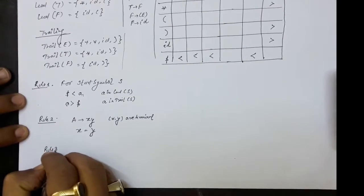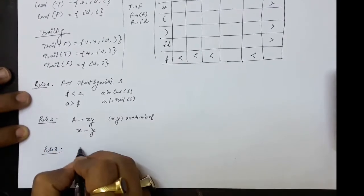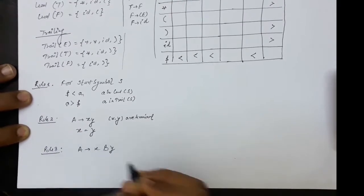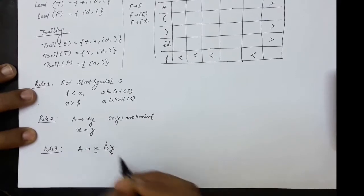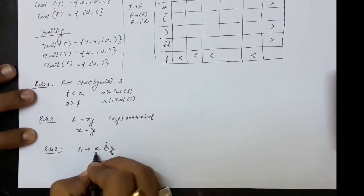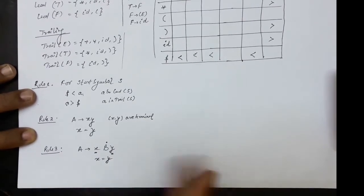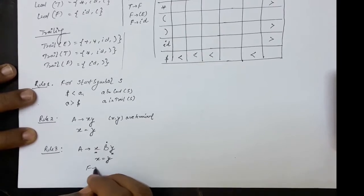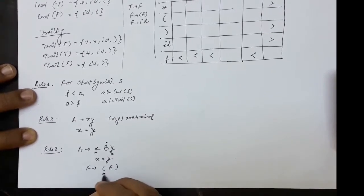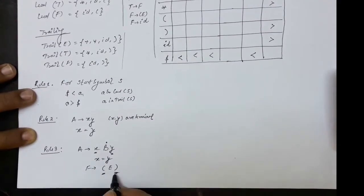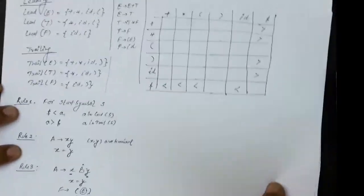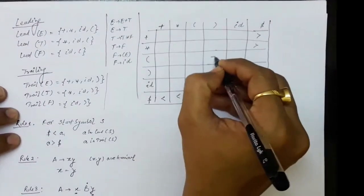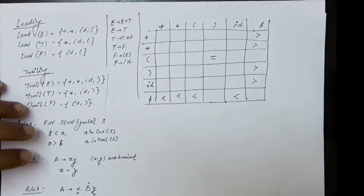Rule number three says: if we have a production A → XBY where B is a single non-terminal and X, Y are terminal symbols, then X has equal precedence to Y. For the production F → (E), opening parenthesis will have equal precedence to closing parenthesis, since E is a single non-terminal appearing in between. So on the table, opening parenthesis has equal precedence to closing parenthesis.